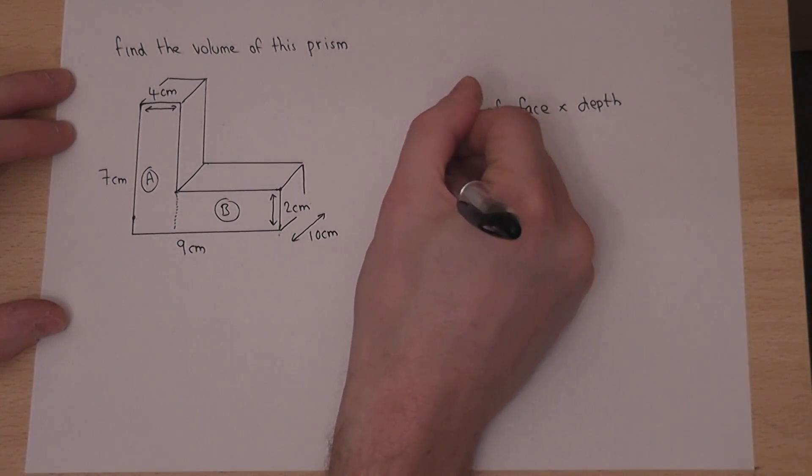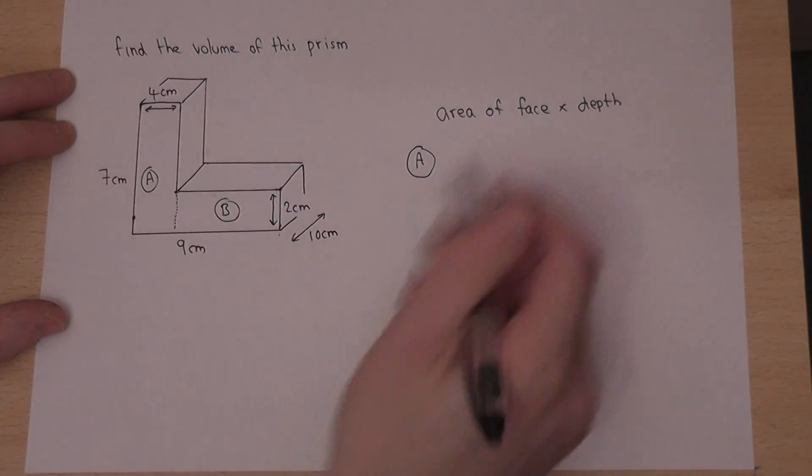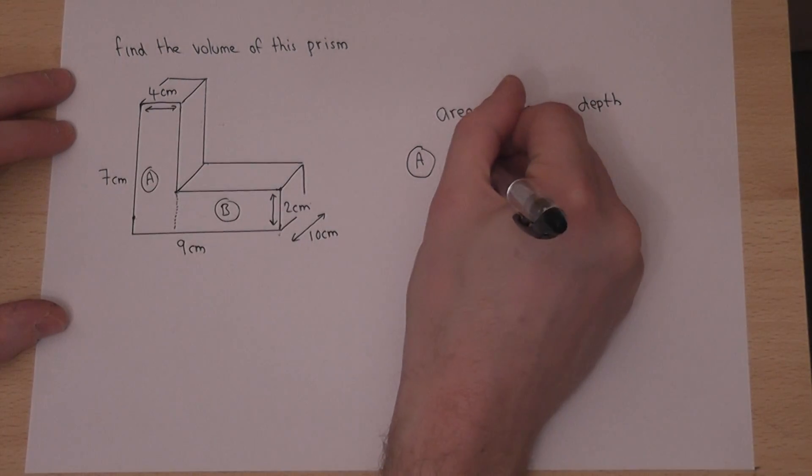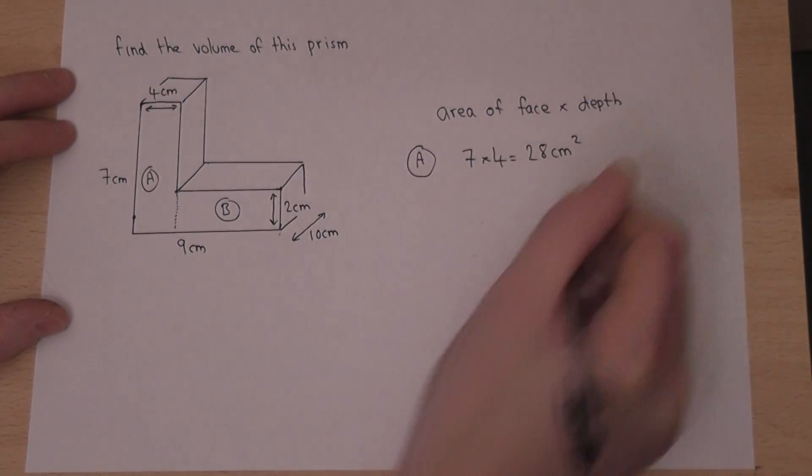Now A is a rectangle with a height of 7 and a width of 4. So A has got an area of 7 times 4, which is 28 centimeters squared.